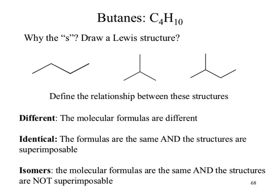One of the things that gets introduced in this chapter is coming up with ways to describe 'different.' Different: the molecular formulas are different. Identical: the formulas are the same, and the structures are superimposable. We'll deal with superimposable in a second. Isomers: the molecular formulas are the same, and the structures are not superimposable.